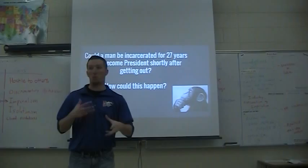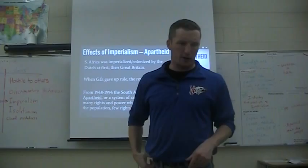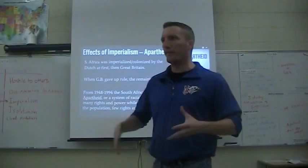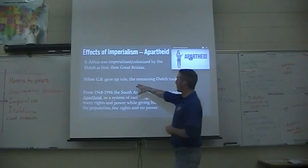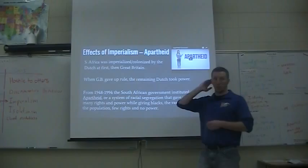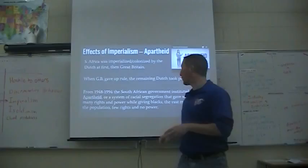This was called apartheid — you've seen the video on it, and you wrote a little blurb about what apartheid was. South Africa was imperialized by the Dutch at first, then Great Britain. The Dutch were there, and then the Dutch found gold and that sort of thing, and the British were like, let's go get that, because we're more powerful than the Dutch. So the Dutch were there very early in the imperialistic era, and then Great Britain came later. The Dutch are white — they're from the Netherlands, northern Europeans.